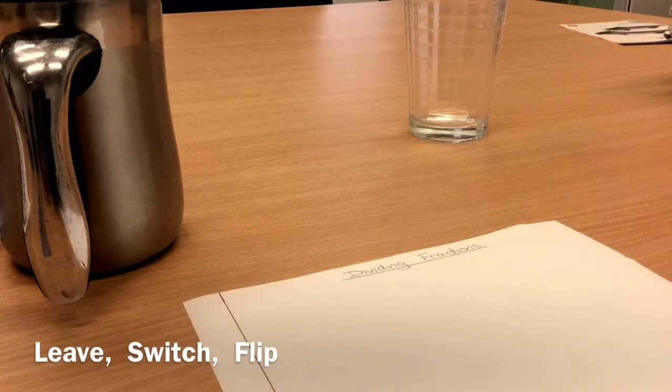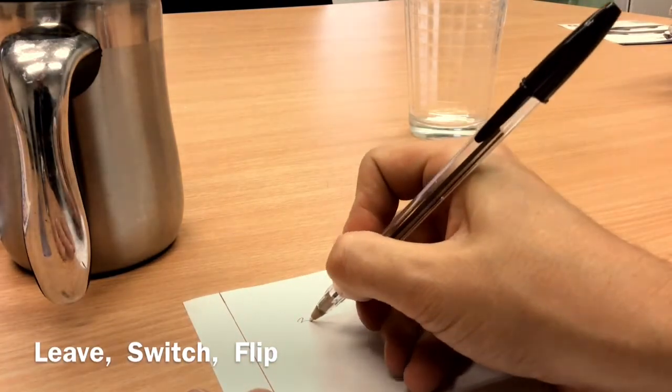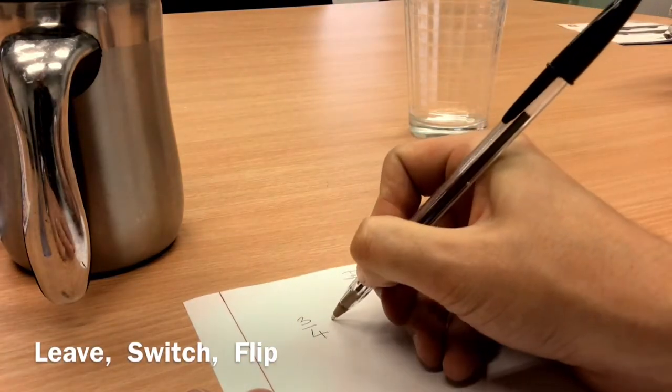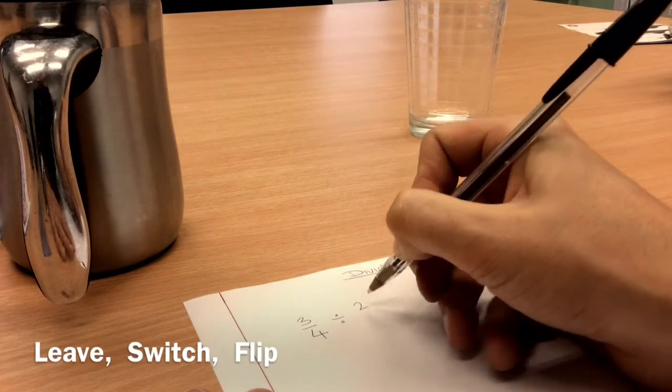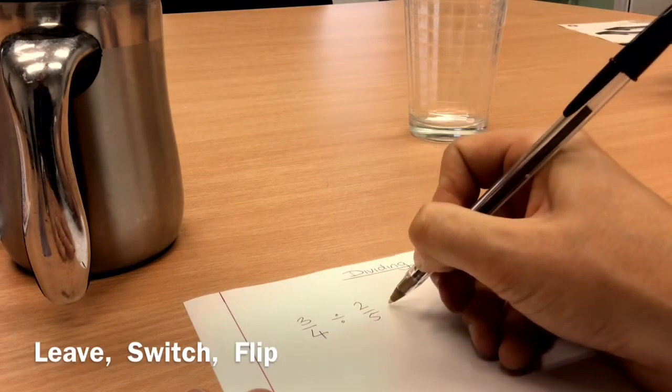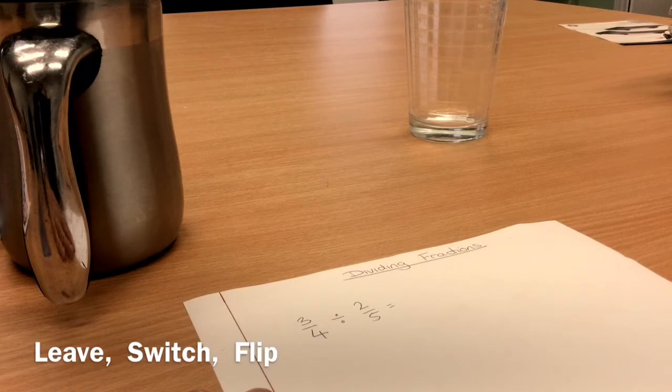We'll start with a quick example. Let's imagine I take 3 quarters, and I want to divide that by 2 fifths. How on earth do I do a fraction divided by another fraction? Well, the answer is in three stages.